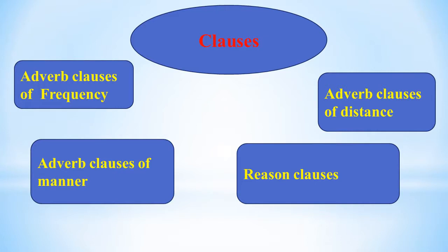'As the price of gasoline has always been quite high in Europe, most Europeans drive small automobiles that use less fuel.' An adverb result clause expresses the effect or consequence of the information in the independent clause. A result clause follows the independent clause in a sentence, using patterns such as: so + adjective/adverb + that.